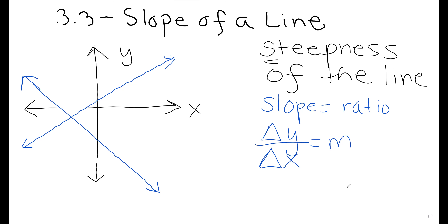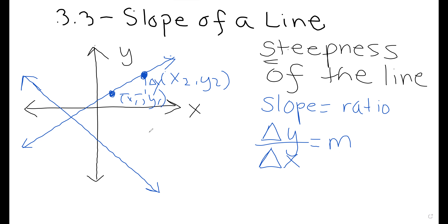If we have two points on a line, we label them as (x₂, y₂) and (x₁, y₁). These subscripts just mean the first and second point. Looking at the change in y from one point to the other, and the change in x from one point to the other, gives us the ratio we need for the slope.